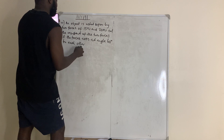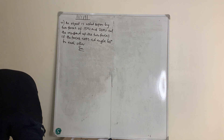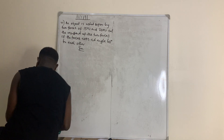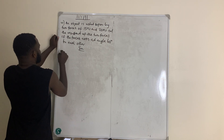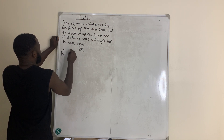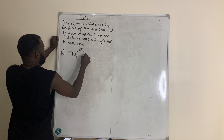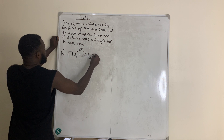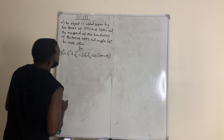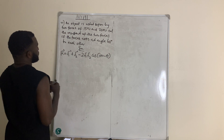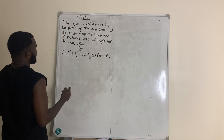There is a formula you can use to calculate the resultant of two vectors whenever they act at a particular angle. The formula says: R squared is equal to F1 squared plus F2 squared minus 2·F1·F2·cos(180 − θ). You can watch my video on vectors if you don't understand how this formula came about.